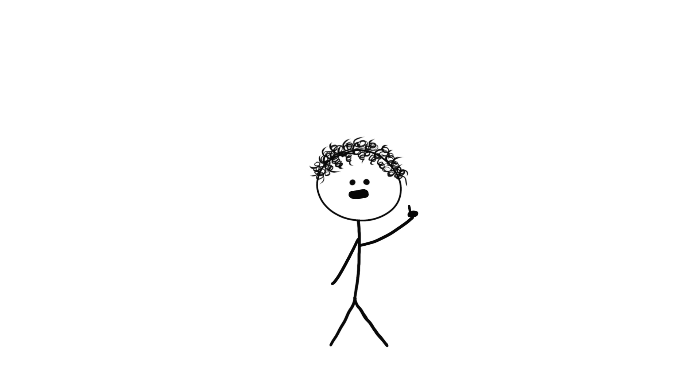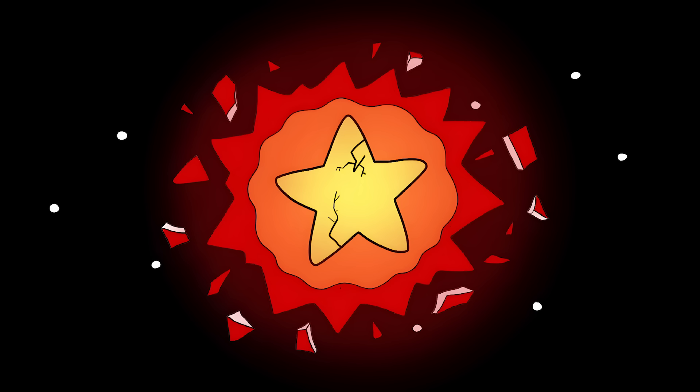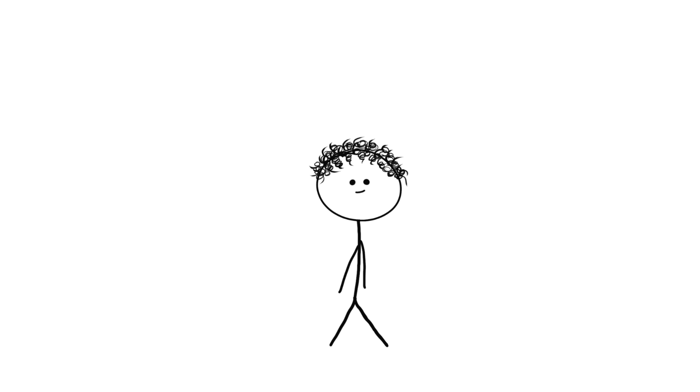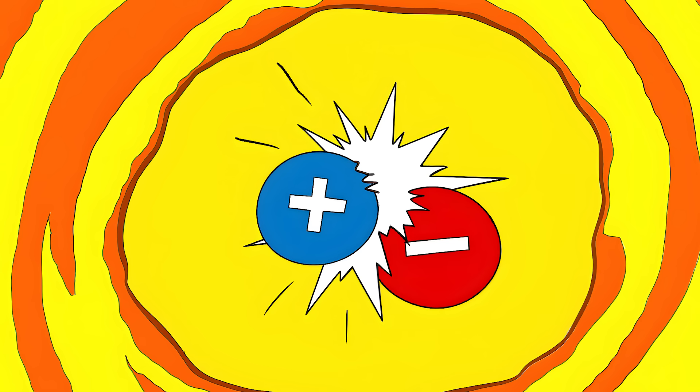Some scientists think it might be something called a pulsational pair instability supernova. Each explosion is powerful enough to blow off part of the star's outer layers. Others think there might be antimatter involved. They think the star might be producing antimatter in its core, causing these repeated explosions.